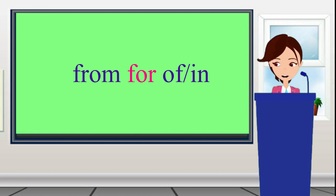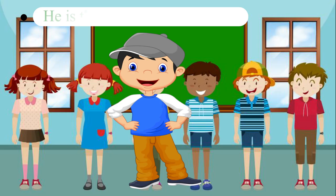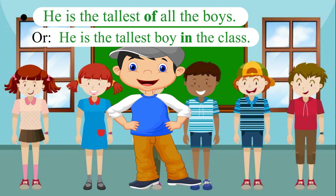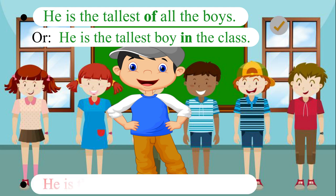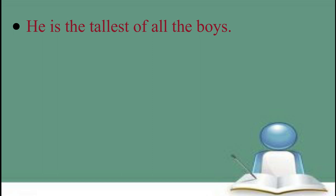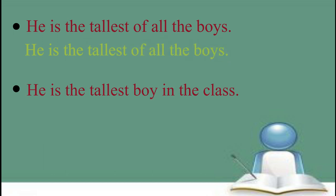Adjectives or adverbs in the superlative degree are preceded by 'the' and followed by 'of' or 'in.' For example, 'he is the tallest of all the boys' or 'he is the tallest boy in the class' are both correct. It would be wrong to say 'he is the tallest from all the boys.' Please repeat: he is the tallest of all the boys. He is the tallest boy in the class.